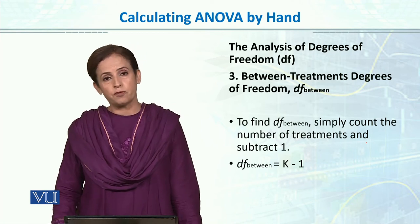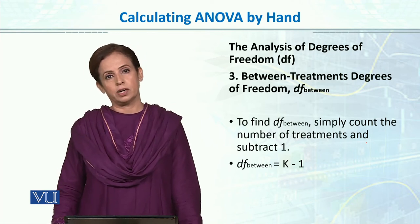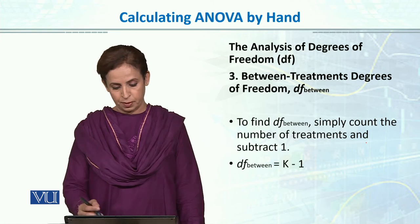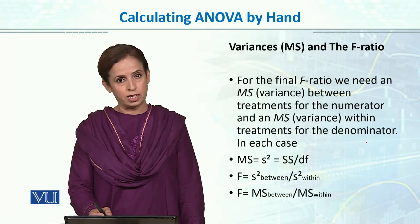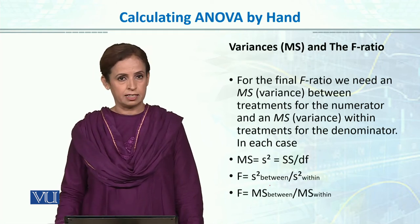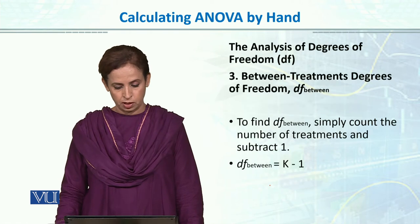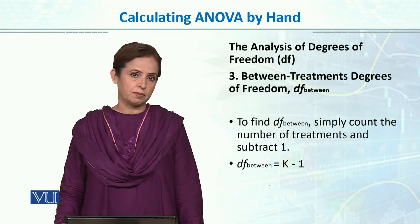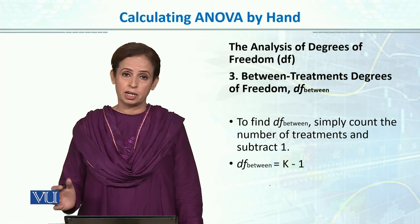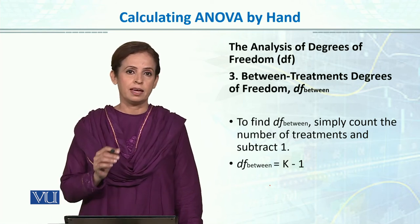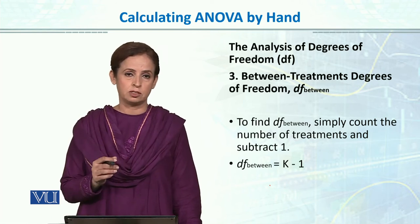How do we calculate degrees of freedom? We have to take three types of degrees of freedom: first, between groups; then, within groups; and then, total. The total degree of freedom is N minus 1.